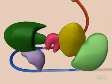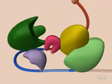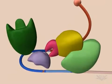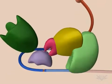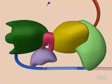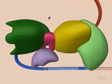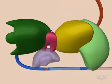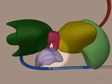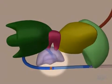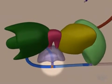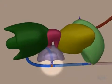Introns are non-coding RNA sequences that must be removed before translation. The process of removing the intron is called splicing. The intron is then cleaved at the 5' GU sequence and forms a lariat at the A branch site.